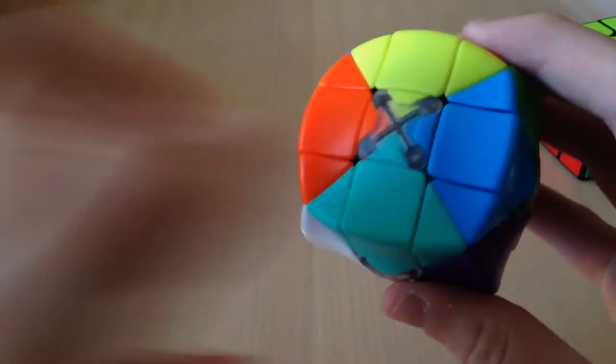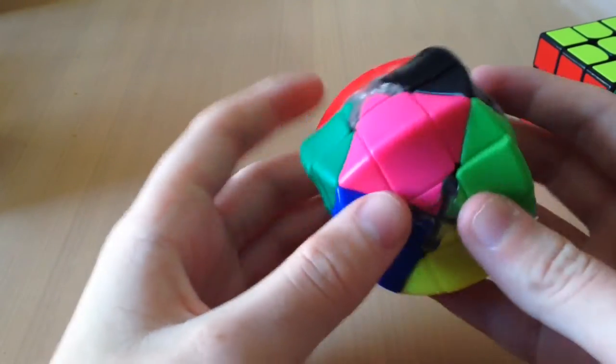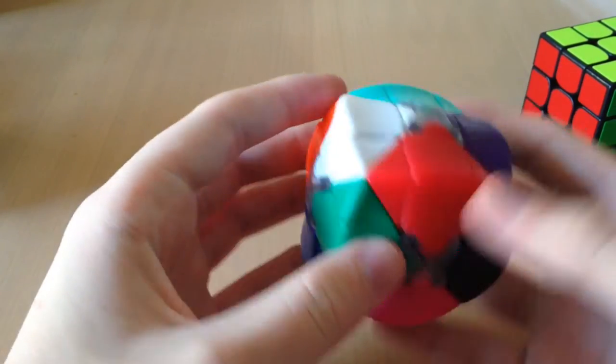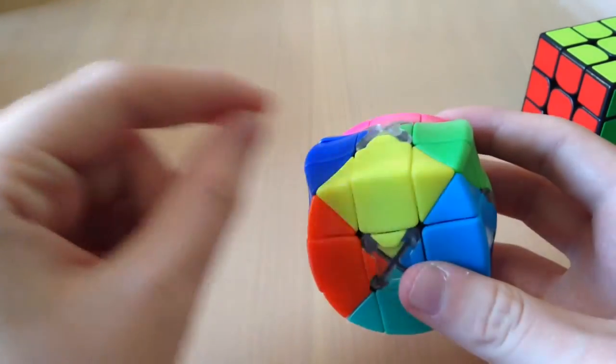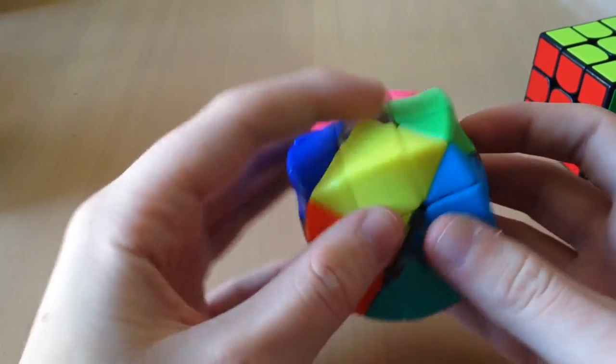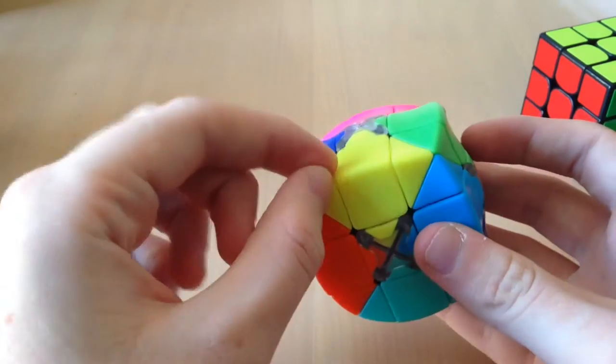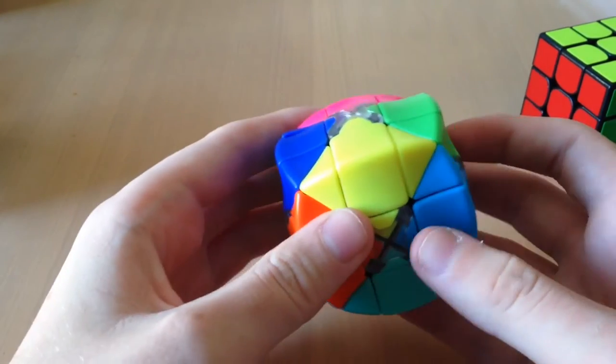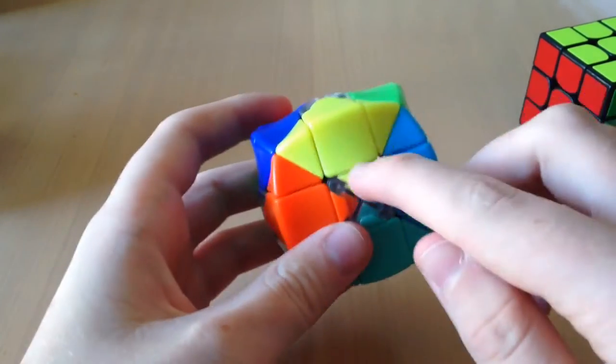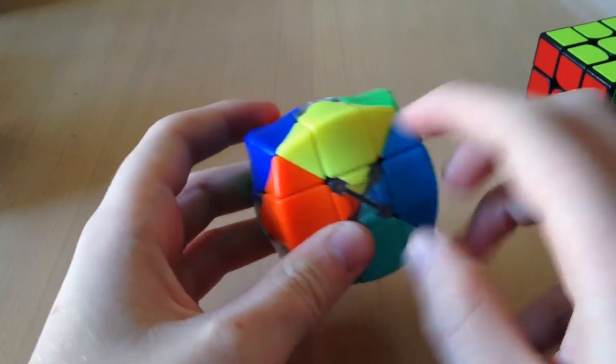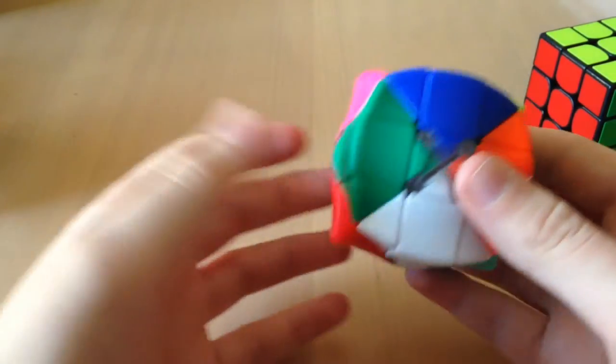But the colors look really nice. And you can tell the difference between each color. But the real challenge of this is trying to figure out where the edges go. So there's no real orientation of the edges when you start off solving this. But you do have to align the edges with their center. So the way the centers go, this is basically a supercube.